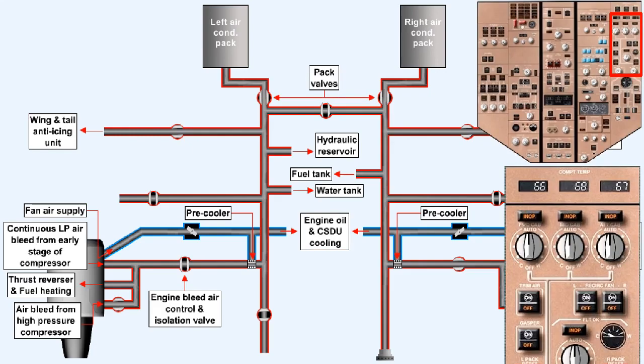The bleed air used to supply the cabin conditioning system is controlled by pack flow control valves, sometimes called pack valves. The pack valves enable the pilot to selectively control the air conditioning system and in the event of a malfunction, particularly one involving smoke in the cabin, shut off individual conditioning packs.